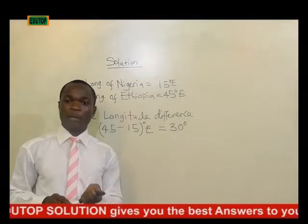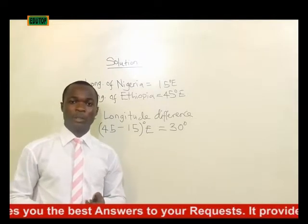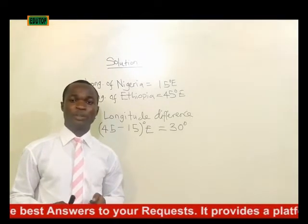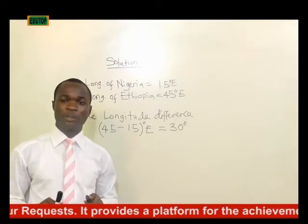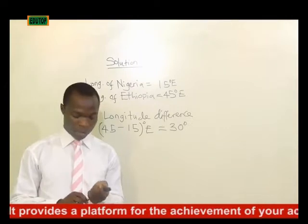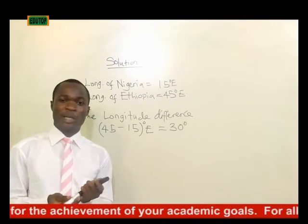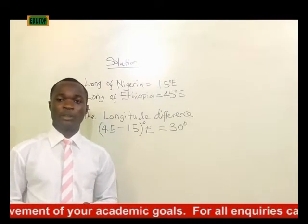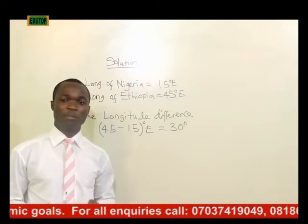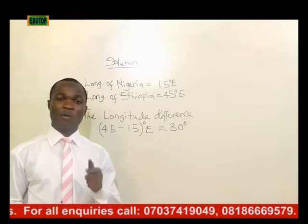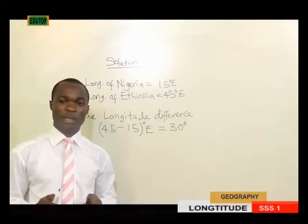We have established the longitude difference to be 30 degrees. The next step is to convert 30 degrees to time. We understand that 360 degrees makes 24 hours, 15 degrees makes one hour, and one degree makes four minutes.